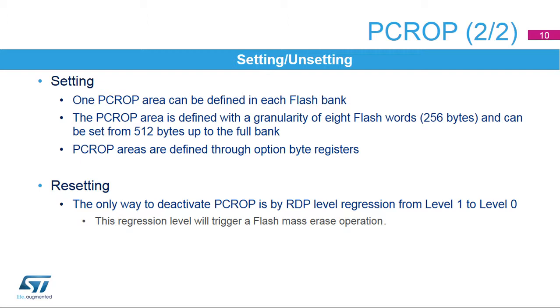Removing PCROP protection can only be done by an RDP level regression from level 1 to level 0. When executed, this mechanism triggers a full mass erase of the flash memory.